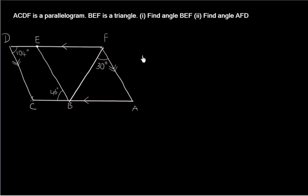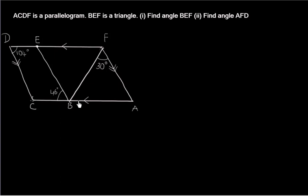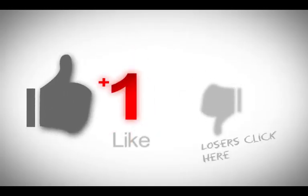Welcome to Aga Math. Here is a question posed by a student. ACDF is a parallelogram where BEF is a triangle. We have to find angle BEF and angle AFD. According to the given information, angle CDE is 104 degrees, angle CBE is 46 degrees, and angle BFA is 30 degrees. Since ACDF is a parallelogram, the opposite sides are parallel.